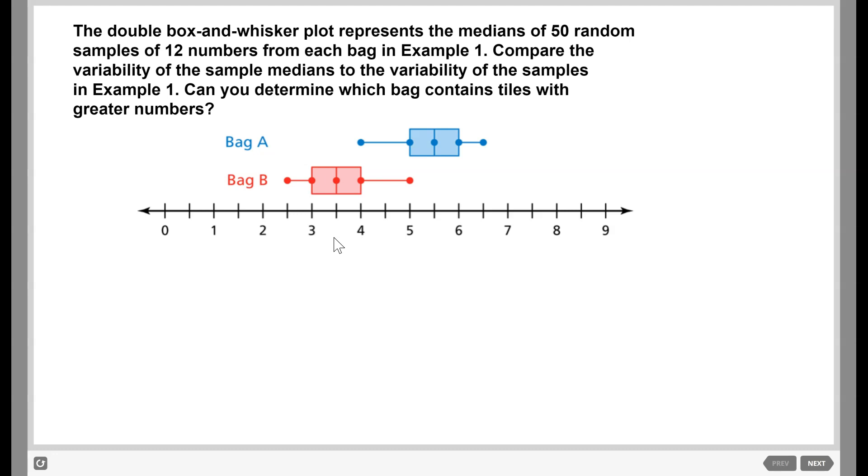The last step would be for us to look at our median. The median for bag A is 5.5 and the median for bag B is 3.5. So we can conclude that it's very likely that bag A has more tiles with greater numbers.